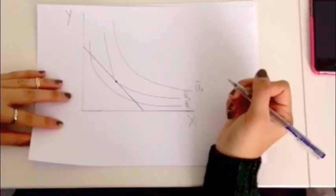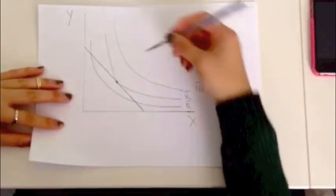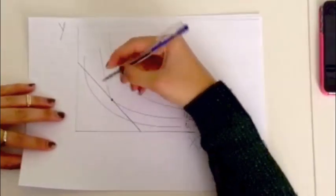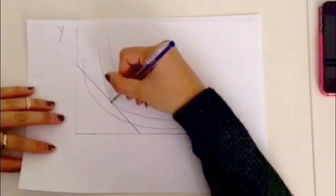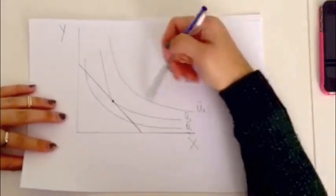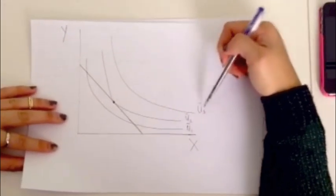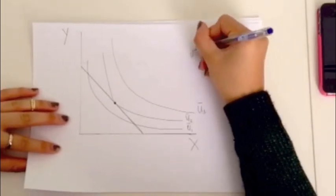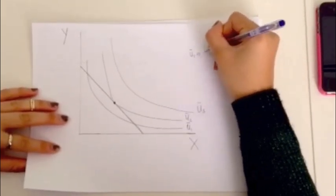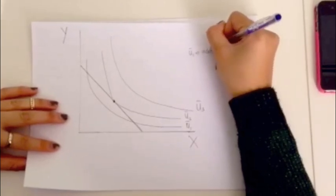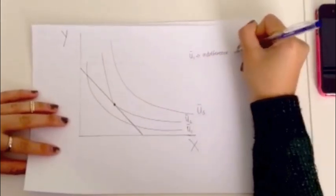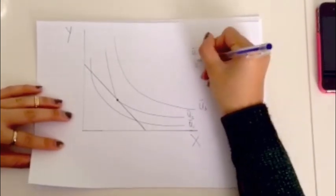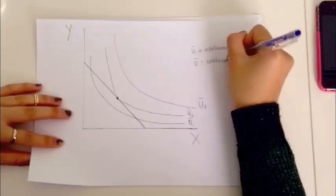Your optimal bundle will always be on the budget constraint, because that is when you are maximizing your budget, but also your utility. So these indifference curves labeled U1, U2, and U3, those are three different indifference curves. Each indifference curve has a set value utility. So say every point on U1 has the utility of 10, and U2 has the utility of 15, and U3 has the utility of 30, for example.